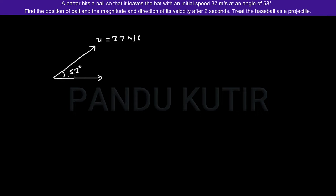Now I am resolving this velocity into two components. One component is along the x-axis and I am writing this as ux, and another is along y-axis and I am writing it as uy. Its component is u cos theta. Here value of u is 37 and cos 53 degrees, upon solving we get 22.26 meters per second.